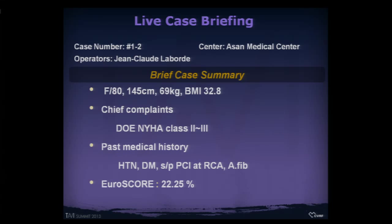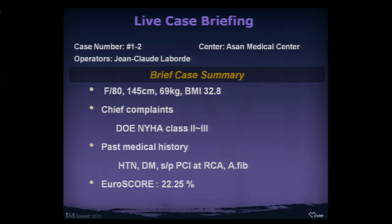Good morning ladies and gentlemen. I'll introduce the second of today's CoreValve cases. This patient is an 80-year-old lady, a very short stature of 140 to 145 centimeters, New York Heart Association class 3 dyspnea on exertion. Past medical history includes multiple comorbidities, which is why the STS score is very high at 22.3 percent.